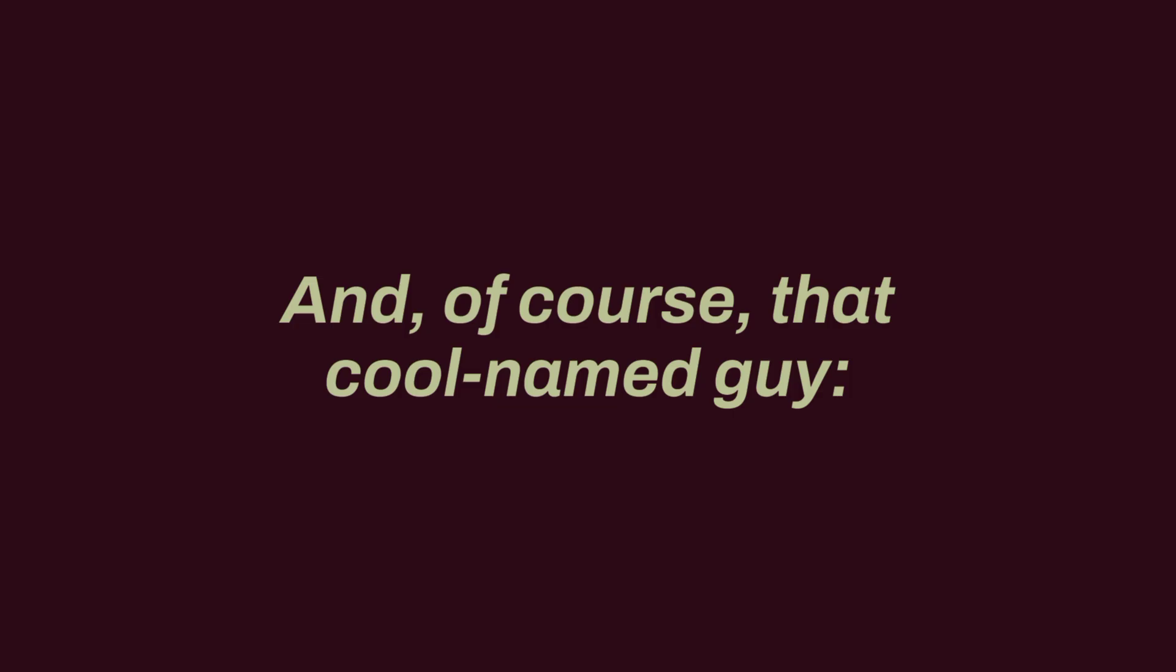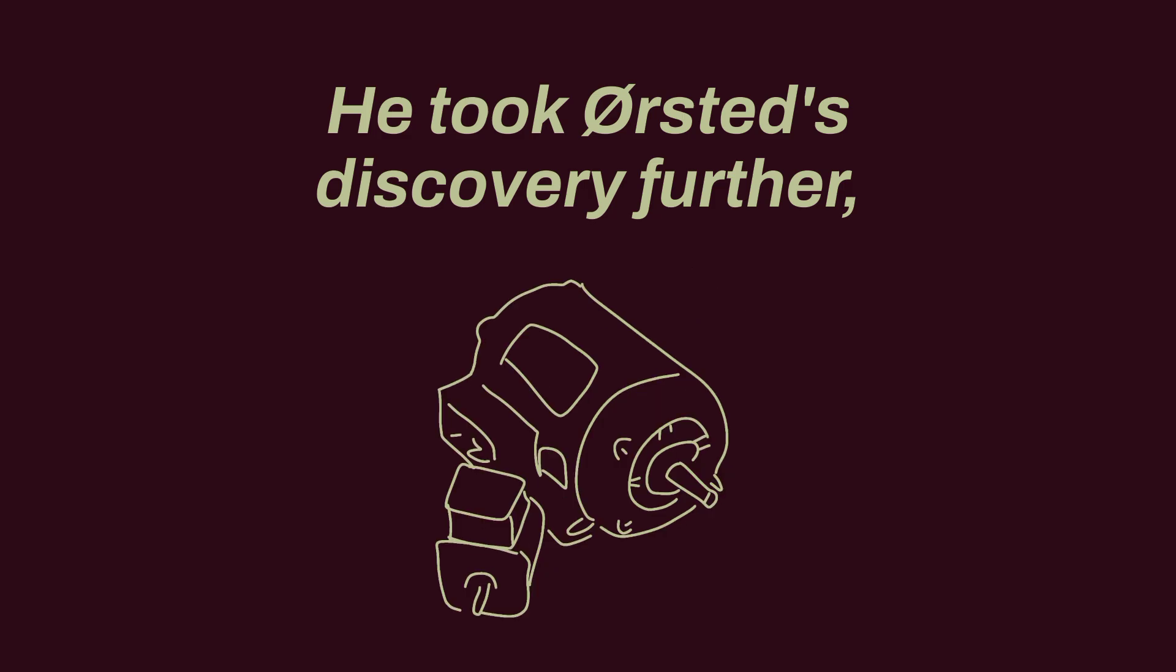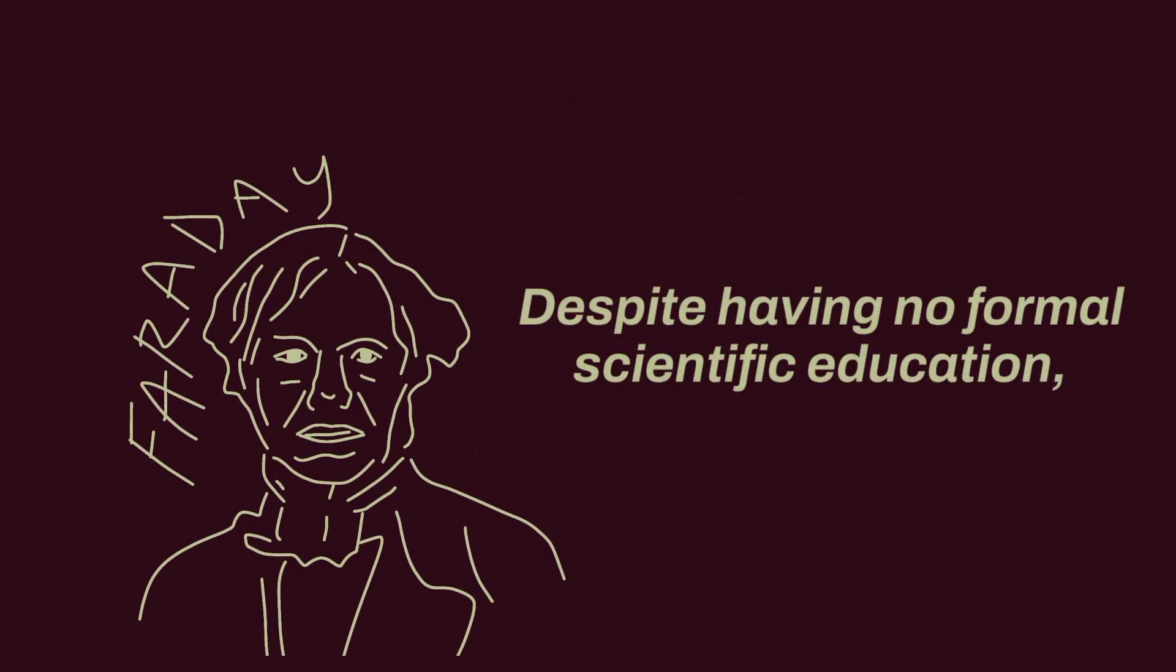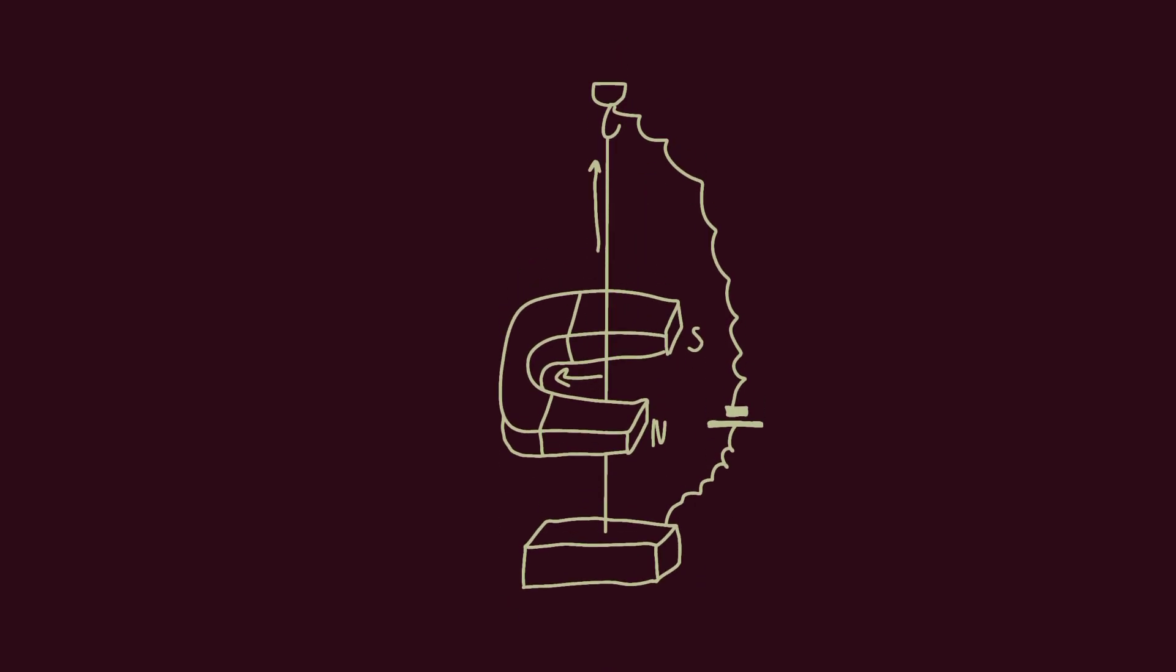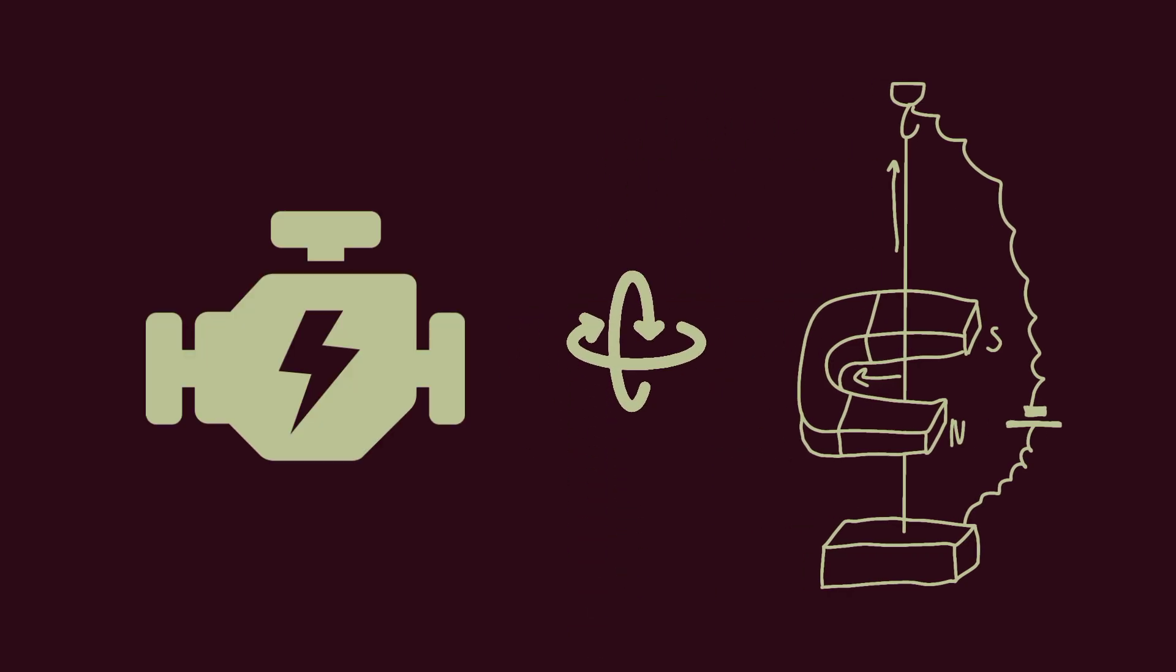And, of course, that cool named guy, André-Marie Ampere. He took Ørsted's discovery further, finding that an electric current creates a magnetic field and laying the foundation for today's electric motors. Without him, we would have no vacuum cleaners or electric bikes. Next up is Michael Faraday. Despite having no formal scientific education, he didn't stop and discovered that magnetism could generate electricity. So he essentially reversed the principles of what we call electric motors and generators and showed how electricity could be produced. Faraday's discoveries allowed electrical energy to enter our homes and factories.